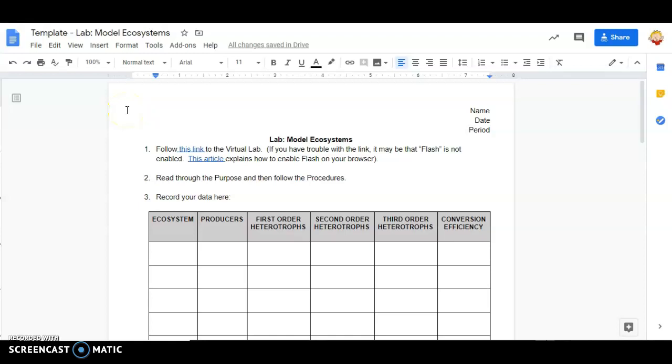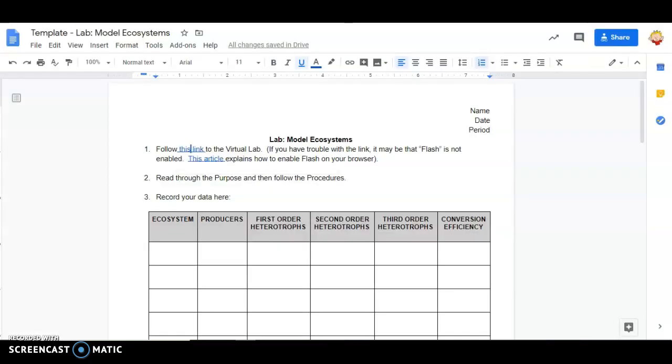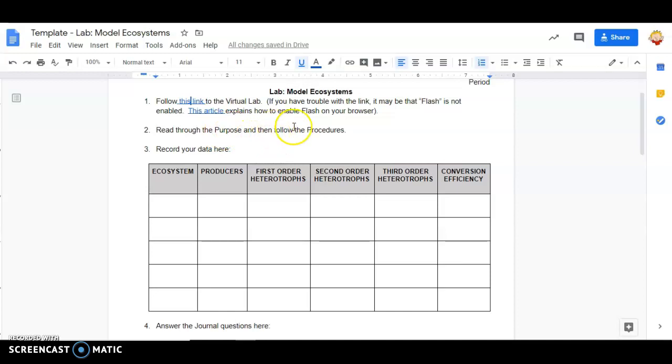All right, so here we go. I'm going to explain to you your lab today on model ecosystems. You'll follow this link right here to the virtual lab, and again it might give you a message that Flash is not enabled. You probably just have to double click on that icon and it'll load it for you. If not, you can follow this link to an article that explains how to enable Flash on your browser. It's pretty simple. If you have any problems, send me a message through Schoology and I'll help you out. But anyway, when we get to the lab, you're going to read through the purpose and then through the procedures, and you're going to record your data right here.